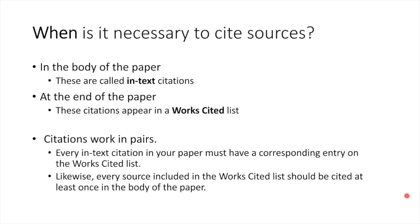There are two types of citations. Some occur in the body of your paper — these are called in-text citations. When someone is reading your paper and they come across words or ideas that are not your own, they need to be directed to the source of that content right away as they're reading. The other type of citation appears at the end of your paper on the Works Cited page. Citations on your Works Cited page provide enough detail that your readers should be able to locate the source for themselves. Remember, every in-text citation in your paper must have a corresponding entry in the Works Cited list, and every source in the Works Cited list should be cited at least once through an in-text citation in the body of the paper.